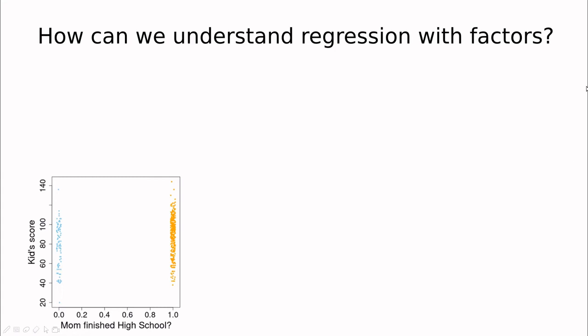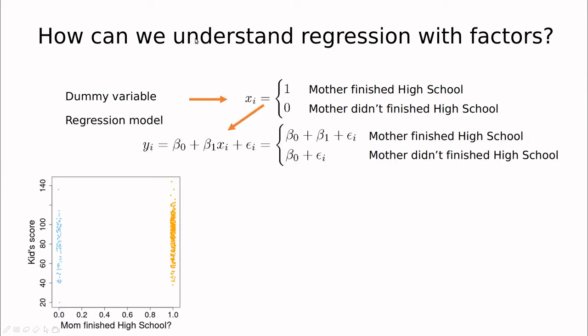So how can we understand regression with factors? Here is the idea. We're going to create a dummy variable and assign 0 for the mother didn't finish high school and 1 for the mother finished high school. Then we're going to do this simple regression. So basically this x_i is a binary number. And as you can see here, when this is 0, this function is simply a constant number plus noise. And when x_i is 1, we're simply fitting this constant value, which is beta 0 plus beta 1.